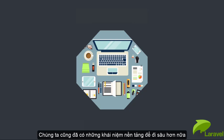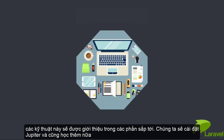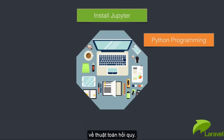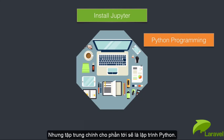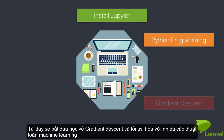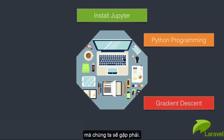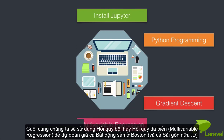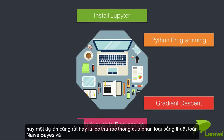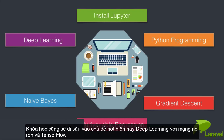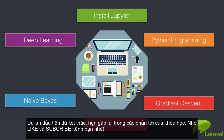We'll dive deep into a lot of these concepts and techniques in the upcoming modules. In the next module we'll install Jupyter locally and learn more about regression and Python programming. After that we'll cover gradient descent, optimization, multi-variable regression to predict Boston real estate prices, building a spam filter using a Naive Bayes classifier, and finally deep learning with neural networks and TensorFlow.